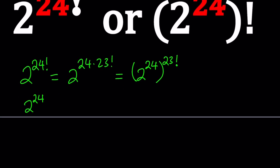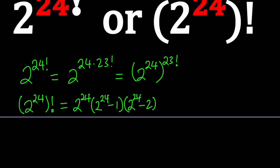2 to the power 24 — whatever that number is — and then we factorial it, and we get something like this. n factorial is n times n minus 1, n minus 2, and so on down to 1 — a product of consecutive numbers. So here we get 2 to the power 24 as the largest factor, then the next number is 1 less, then 1 less than that, so minus 2, and so forth, until you hit 3, 2, and finally 1.